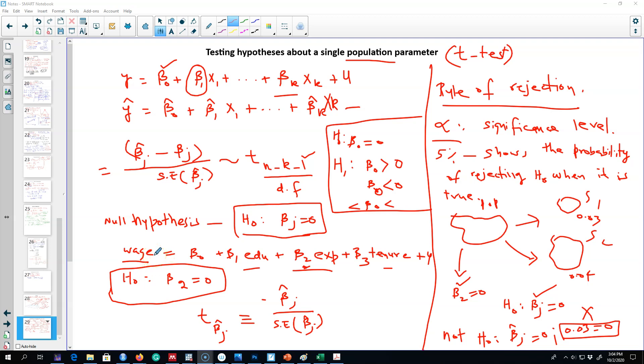In the previous video, I talked about how to test hypotheses about a single population parameter beta j, and we are using t-test for testing any hypotheses about any of those coefficients.